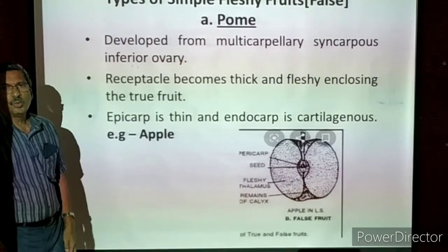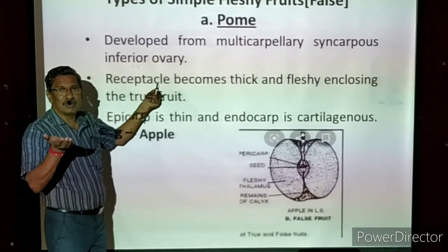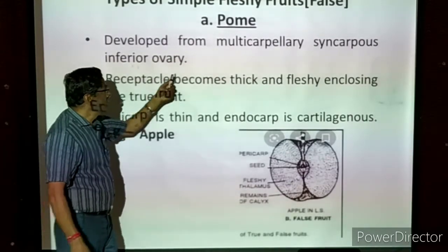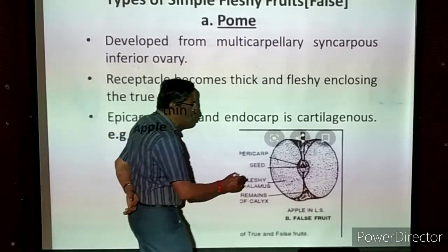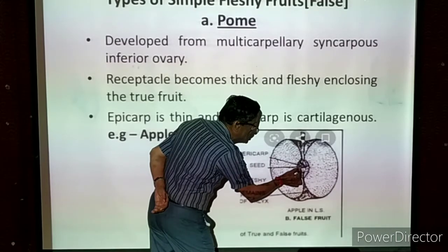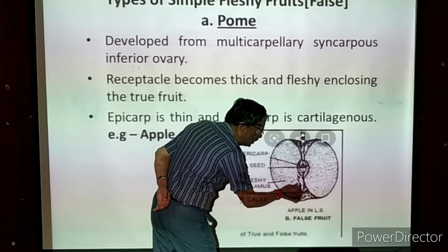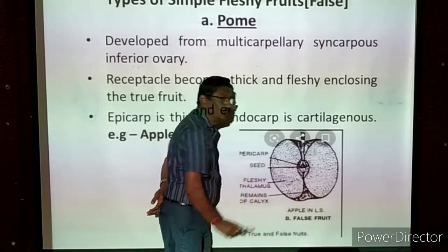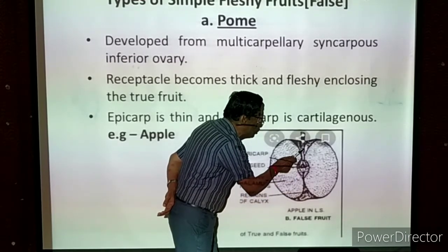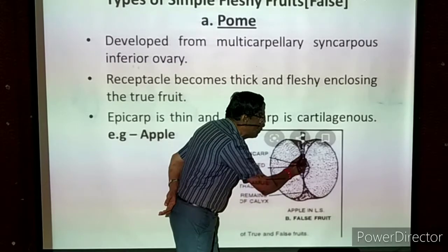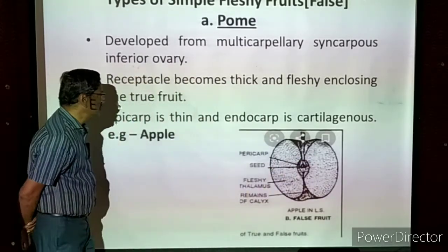In the apple, the receptacle — also called the thalamus — on which the ovary is present becomes thick and fleshy, enclosing the true fruit. The true fruit is the actual ovary, which developed from the ovary. The seeds are present here — ovules developed into seeds. So the true fruit is present inside, but the thalamus covers the real fruit, becoming thick and fleshy, storing an enormous amount of food.